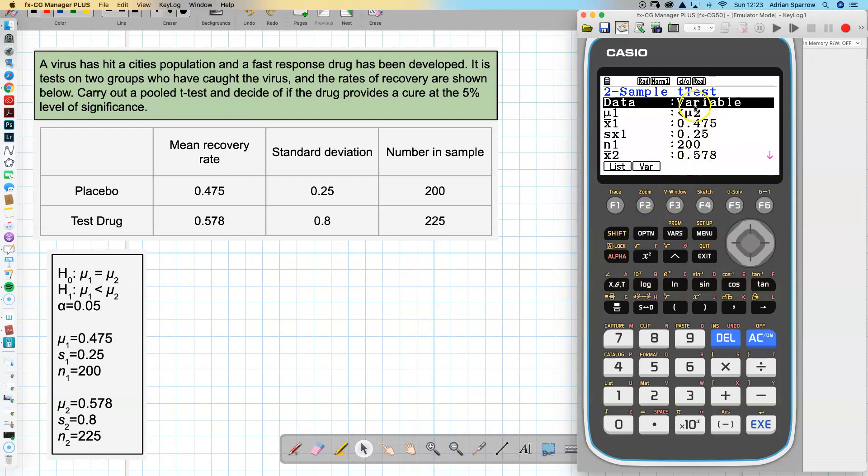I've already put everything in, so I've chosen variable for the first one. From the alternate hypothesis I said that I want μ2 to be bigger than μ1, and then I just put in the first mean, the first standard deviation, the number in the sample, and then done the same with the second sample.